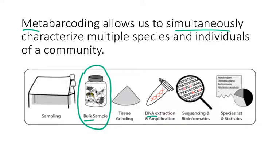And then just like we talked about with DNA barcoding, you're still using a genetic barcode like CO1 to identify what species were in your original sample. But you're able to do that all at once — you don't need to separate out each individual. You can take a bulk sample and then use bioinformatic techniques to figure out which species were present.